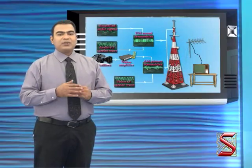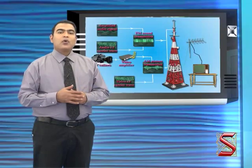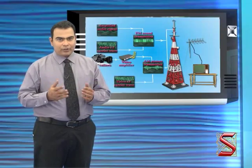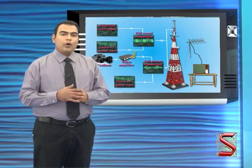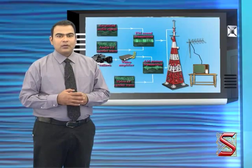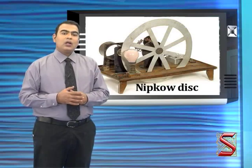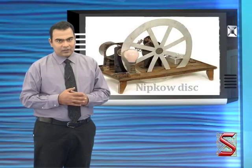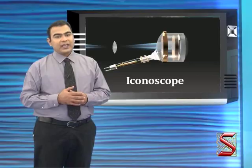The two basic steps involved in telecasting and reception by TV are: (a) production of audio and video signals or modulation, and (b) the TV transmitter. One important stage in the production of video signals corresponding to an object is scanning. In older days, a mechanical system called the Nipkow disk was used for scanning.